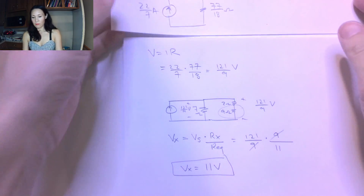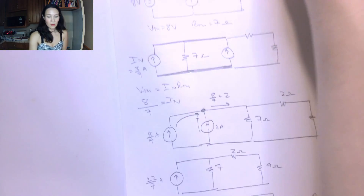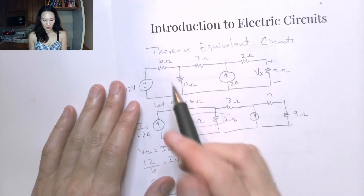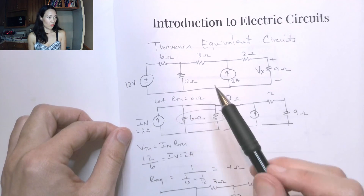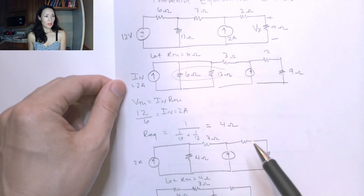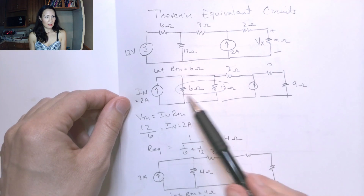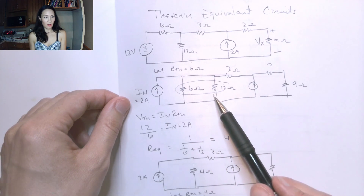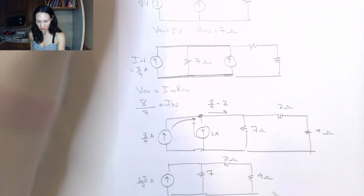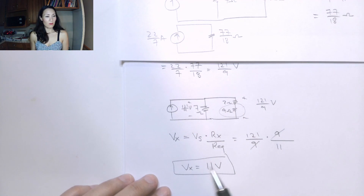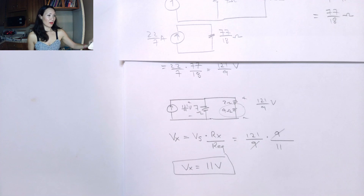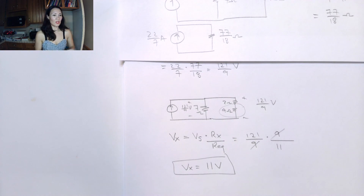The process is: start on one side of the circuit and do a series of source transformations, going back and forth between voltage and current sources. Every time you do that, you can make simplifications and combine resistors until you get it down to just one R-equivalent with one source. Then you can go back and find whatever voltage or current you're asked for in the circuit.